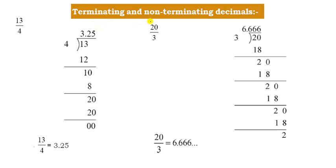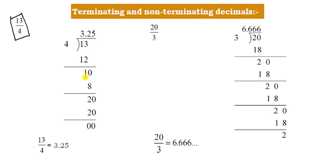What is Terminating and Non-Terminating Decimals? Let us see what will happen with 13 upon 4. When 13 is divided by 4, four 3s are 12. After subtracting, we get 1.